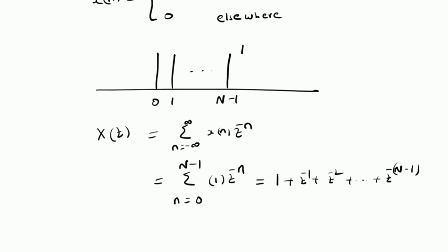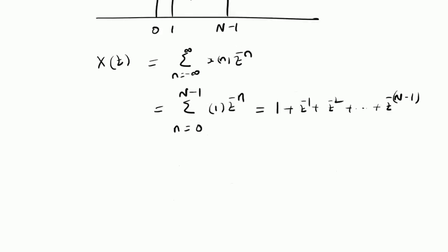So that is the Z transform. Now by using the definition of a geometric series of finite duration, that is the summation of alpha power n with n equal to 0 to N minus 1, the definition is actually equal to 1 minus alpha power N divided by 1 minus alpha. So that is the definition.